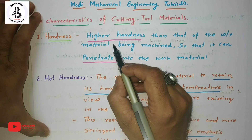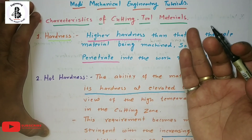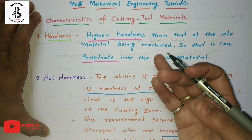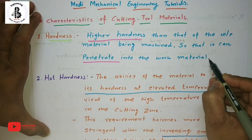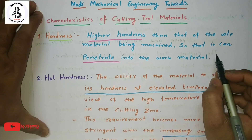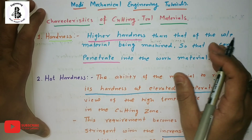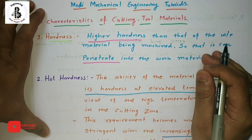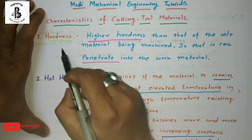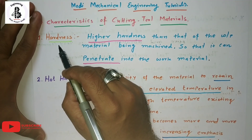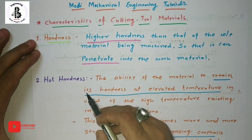The tool material must be harder than the workpiece material so that the tool material can penetrate into the workpiece. Otherwise, the tool material will wear out and will not have any ability to cut other materials. So the first required property is hardness.